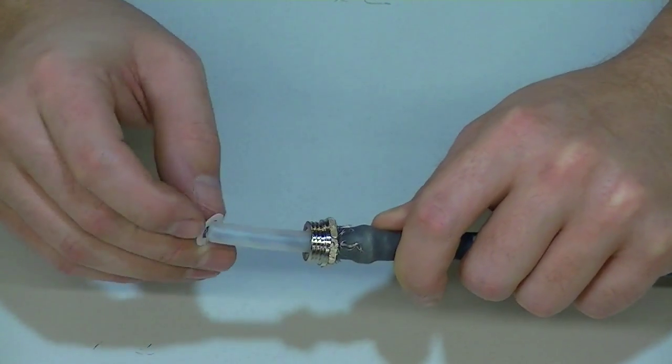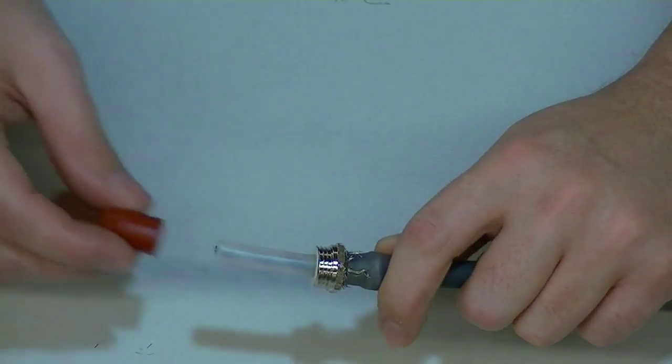Place the white plastic washer over the internal cable insulation all the way flush against the screw joint.